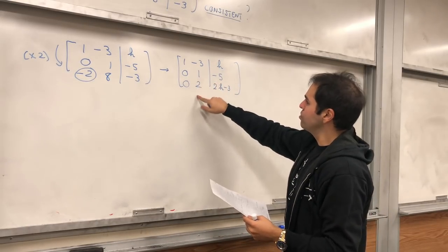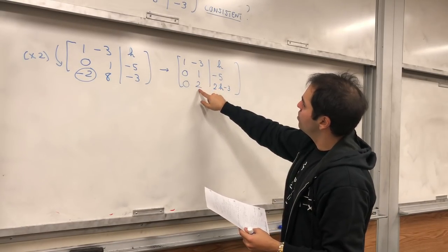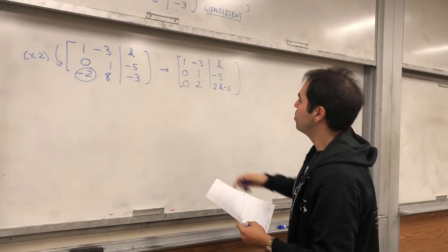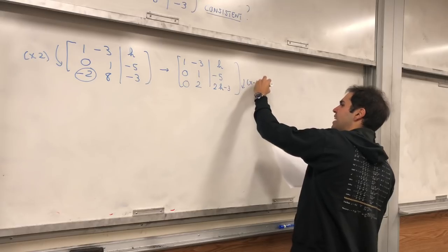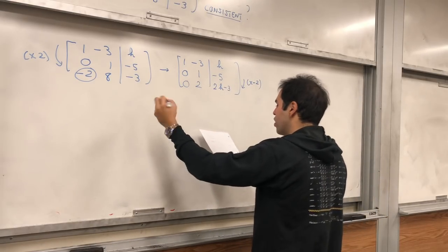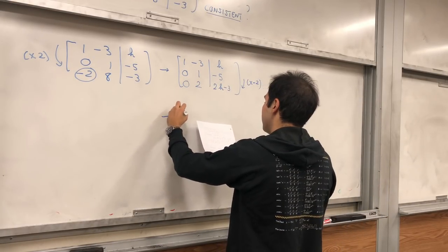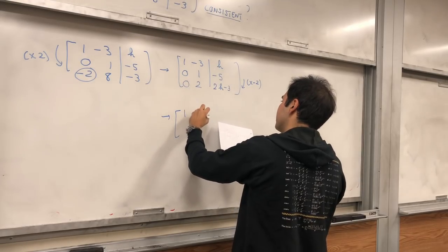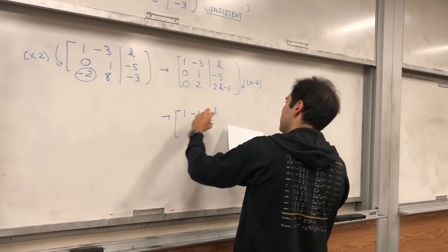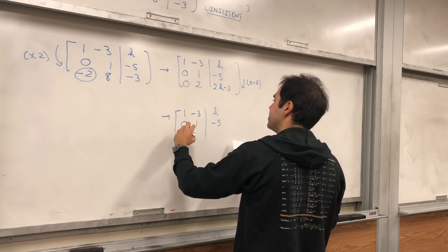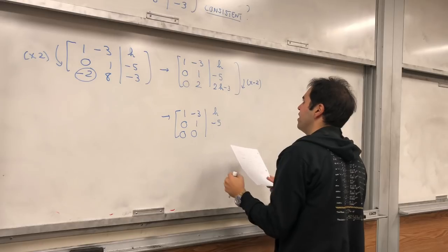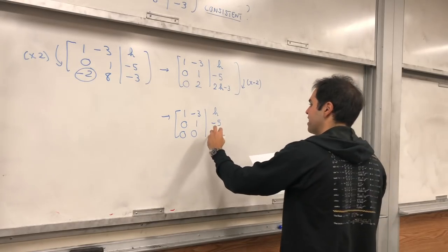Okay, so that's good, this one is here, and then let's try to eliminate this 2. So let's subtract 2 times the second row from the third row, and we get, I believe, [1, -3, h; 0, 1, -5] and then let's see, [0, 0, 2h - 7].